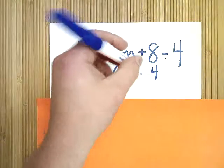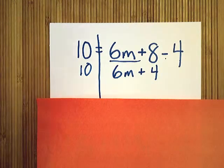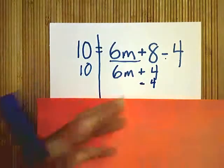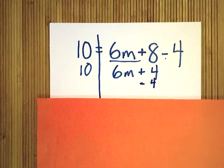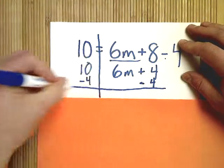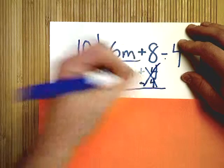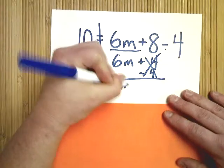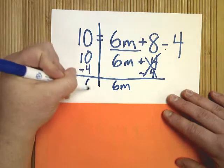To get rid of something, I have to do the opposite operation of what's shown. So I do positive 4 minus 4 because 4 minus 4 is 0. The problem is, if you do something to one side of an equation, you have to do it to the other. So then you just do 6m, bring that down. 10 minus 4 is positive 6.